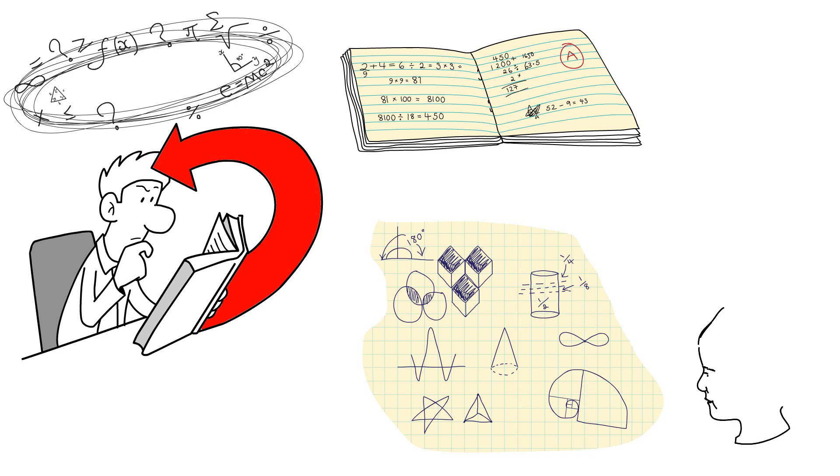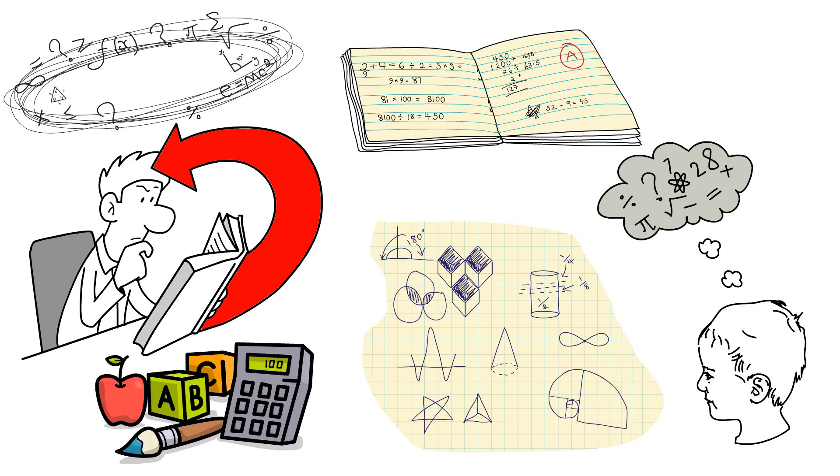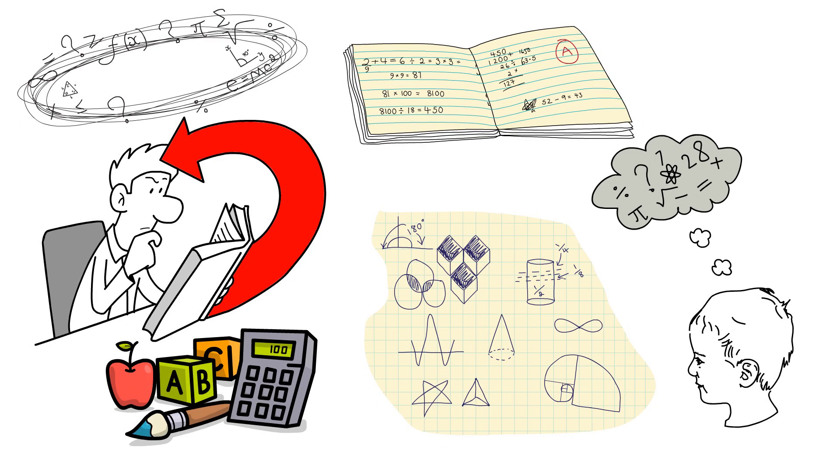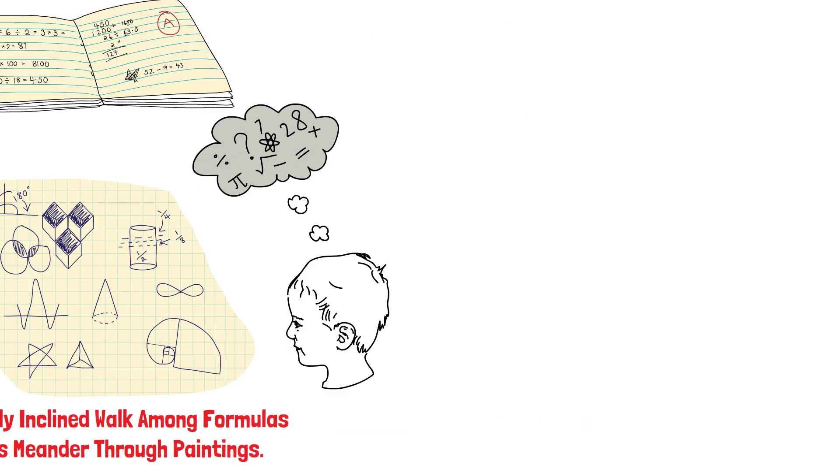So, if you dream in digits and logic gives you goosebumps, your logical mathematical intelligence may be blossoming, eager to decode the mysteries of numbers, science, and reasoning. The mathematically inclined walk among formulas the way art lovers meander through paintings.